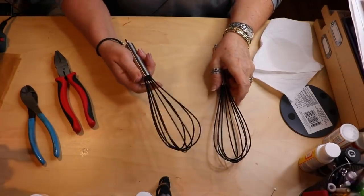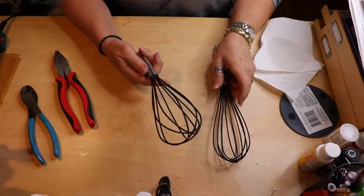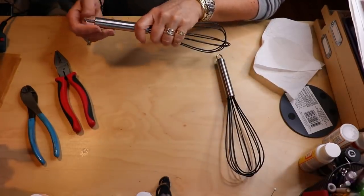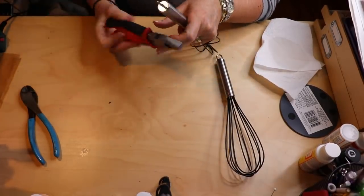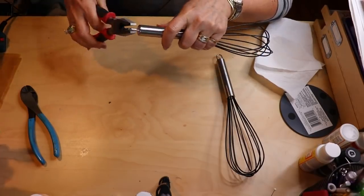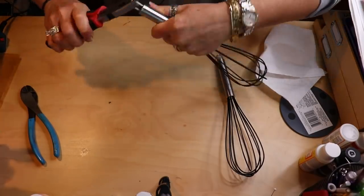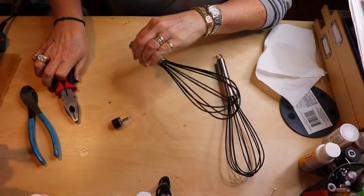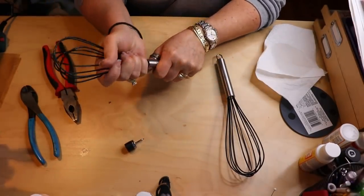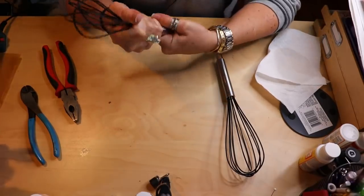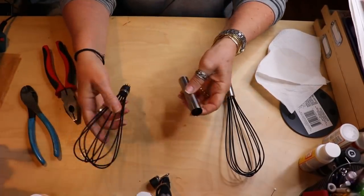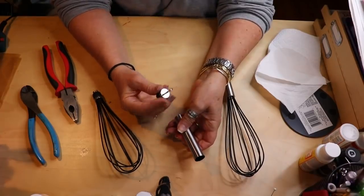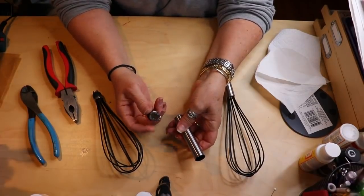Okay, so what we're going to do to start is we are totally going to dismantle one of our whisks. And how you're going to do that is use your pliers and twist this little bottom part until you pull it off. And then you're going to have to twist this top part as well and pull that off. Save these pieces because, see this is how you become a craft hoarder, oh my gosh.